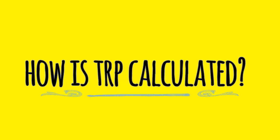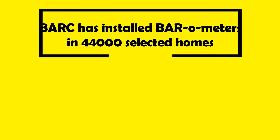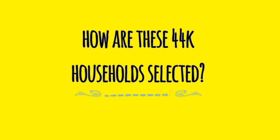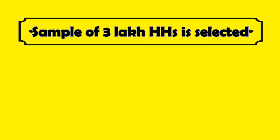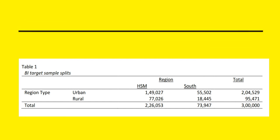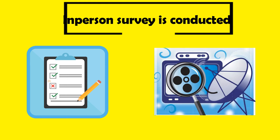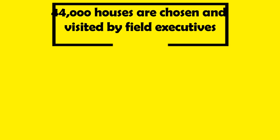How is TRP calculated? BARC has installed devices called barometers in 44,000 households across the country. A sample of approximately 3 lakh households is chosen as a representative of the country's population. This target population is set for two dimensions: urban-rural and Hindi-speaking markets versus south. Each household is asked to complete an in-person survey collecting basic demographics such as television ownership, age and sex of household members, languages spoken, mode of signal reception, and other variables. Out of these 3 lakh households, 44,000 are chosen at random for the same dimensions and are then visited by field executives and asked to join the program.